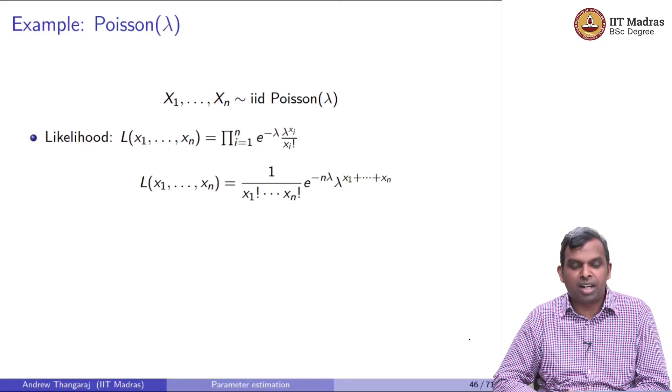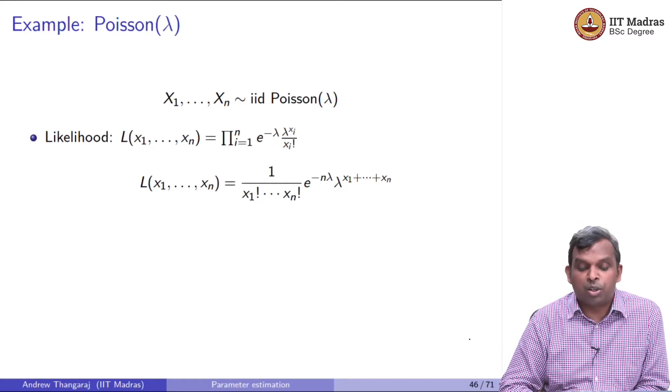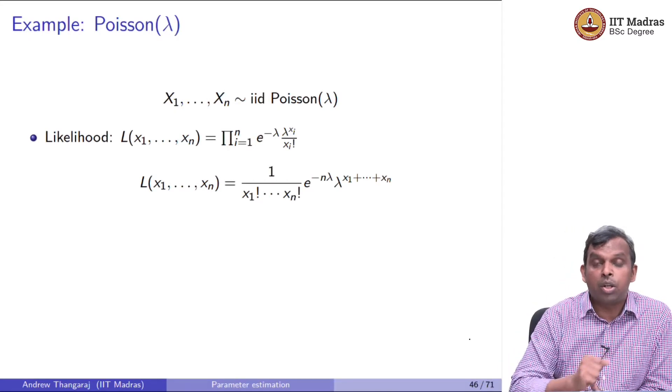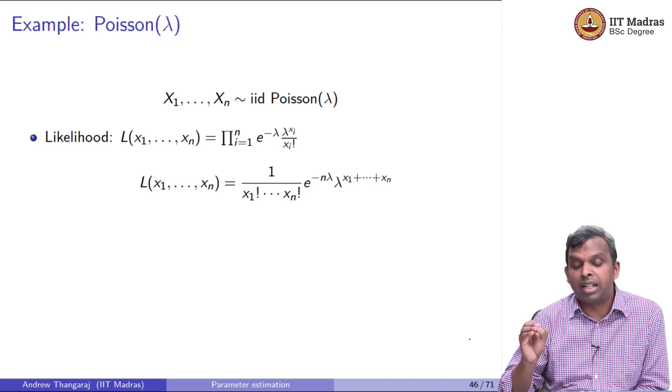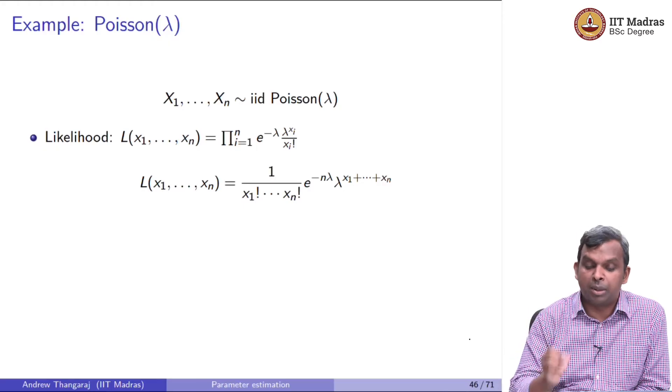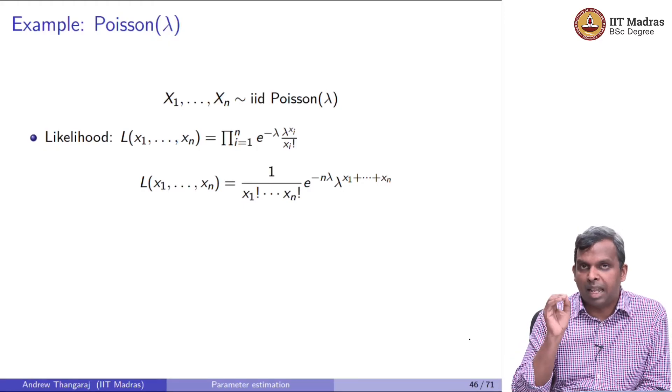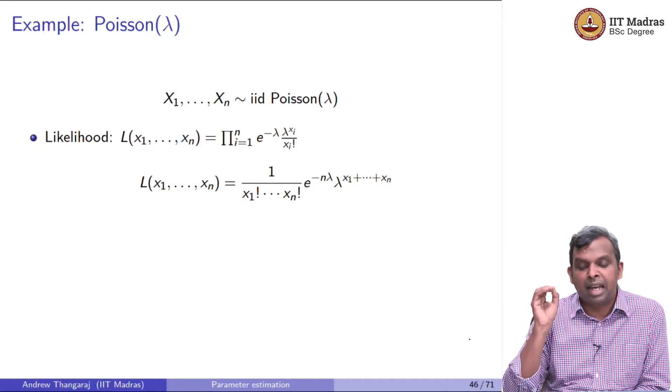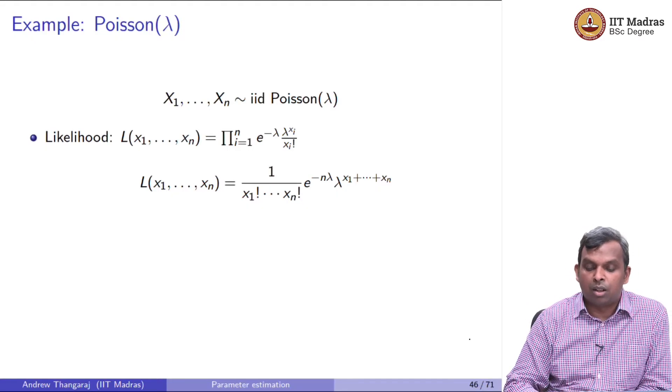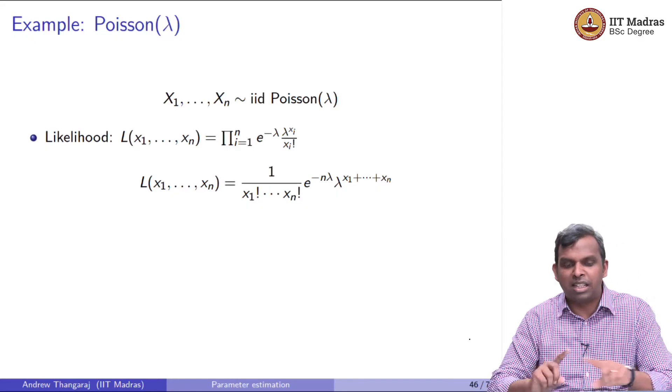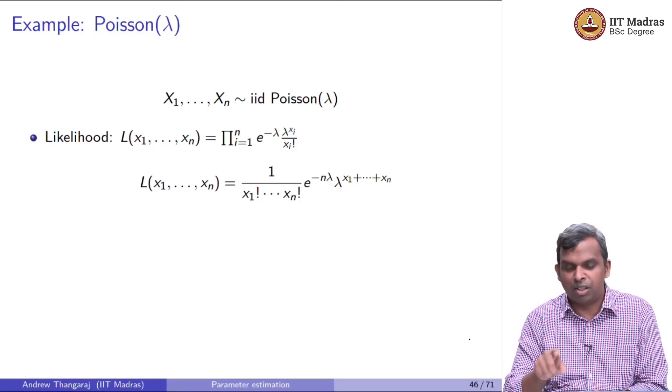All of you remember the Poisson distribution. From the PMF of the Poisson distribution, if you find the likelihood of a particular sampling, it is going to be the product of the PMF evaluated at each xi. So it is going to be e^(-λ) times λ^xi divided by xi factorial. Then you can multiply all these things together.